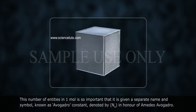This number of entities in one mole is so important that it is given a separate name and symbol known as Avogadro constant, denoted by N.A.